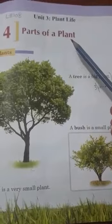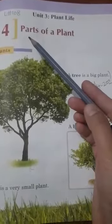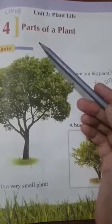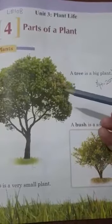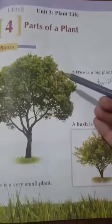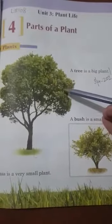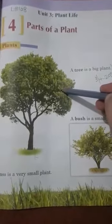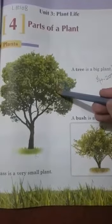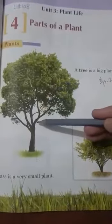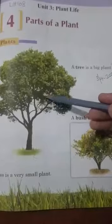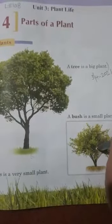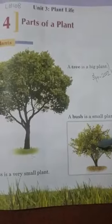Plant کہتے ہیں پودے کو اور parts مطلب حصے۔ آج ہم پودوں کے حصے پڑھیں گے کہ کون کون سے ہوتے ہیں۔ آپ کو آسانی سے pictures کے ذریعے سمجھایا جائے گا۔ پہلی picture میں tree کی picture بنی ہوئی ہے — یہ plants کی ایک قسم ہے، یہ بڑے ہوتے ہیں جیسے درخت۔ دوسری picture میں bush ہے — یہ چھوٹے ہوتے ہیں، جھاڑیاں ہوتی ہیں۔